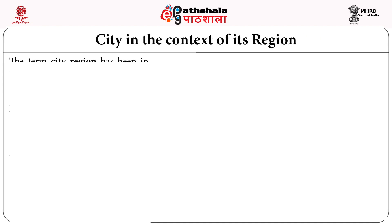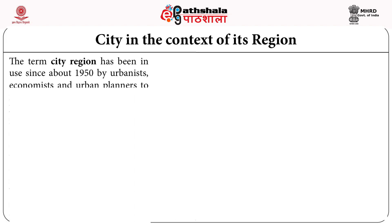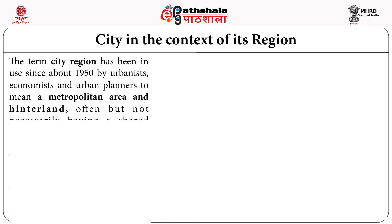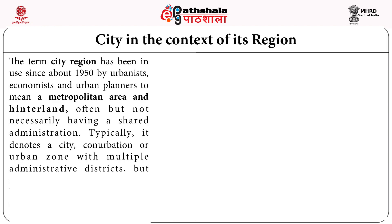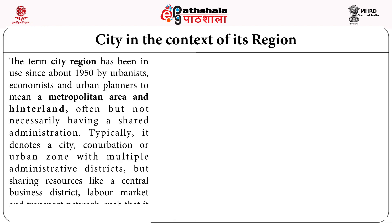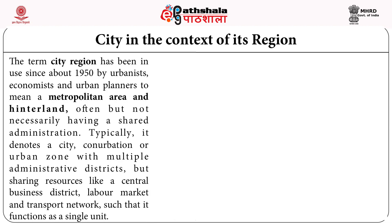The term 'city region' has been in use since about 1950 by urbanists, economists, and urban planners to mean a metropolitan area and a hinterland but not necessarily having a shared administration. Typically it denotes a city, conurbation, or urban zone with multiple administrative districts but sharing resources like labour market and transport network so that it functions as a single unit.